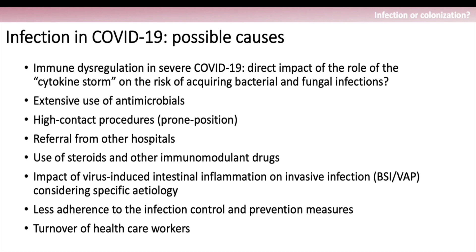COVID-19 adds to this complication because super-infection in COVID-19 is quite common. The main reasons why COVID-19 is associated with super-infections include the direct role of the cytokine storm, the extensive use of antimicrobials, high-contact procedures like proning the patient and referral from other hospitals, the use of steroids and immunomodulating agents, the impact of virus-induced intestinal inflammation on invasive infection, less adherence to infection control measures especially during the pandemic, and the high turnover of healthcare workers with staff and nurses constantly changing in an unfriendly environment for proper nursing care.